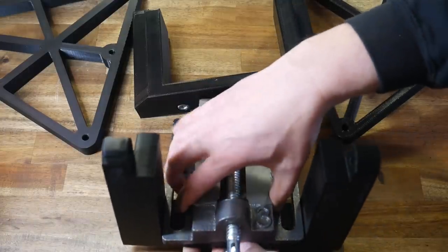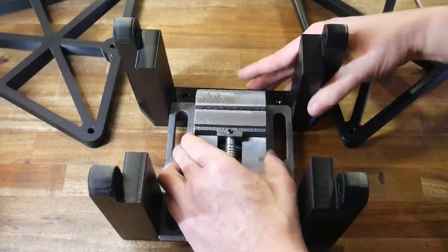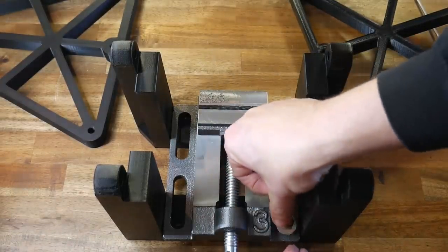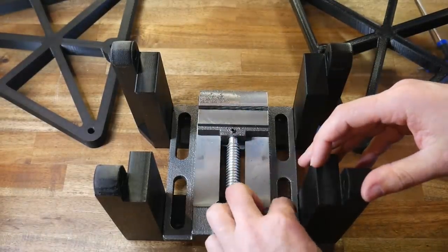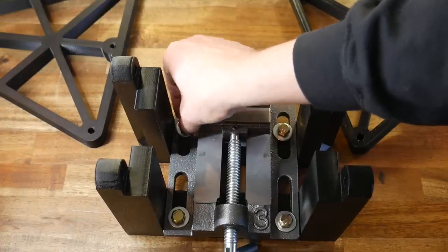Now we take four M8x25mm bolts, along with a washer, and put them through the openings in the vise, and just get the thread started on the nuts underneath. Nothing should be tight yet.